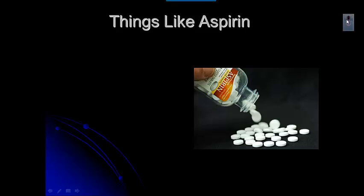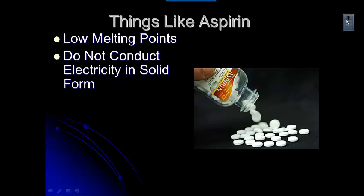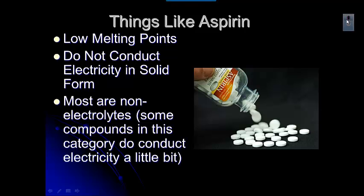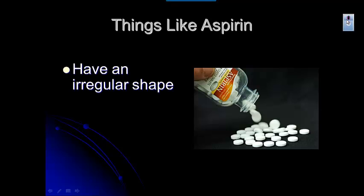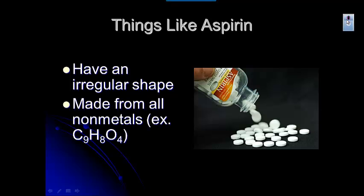Let's talk about things like aspirin. When you did the work in the lab and you looked at aspirin, you realized that those types of compounds have very low melting points — in fact, they were the only ones that melted in the lab. They don't conduct electricity in their solid form, and most of them are non-electrolytes. They have irregular shapes — kind of different shapes depending on what you looked at.